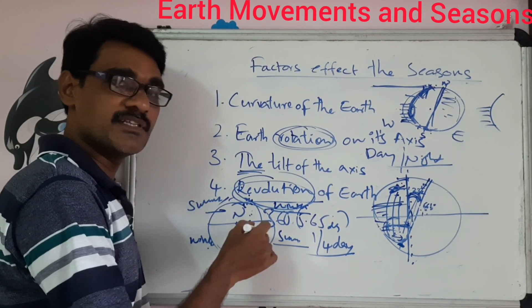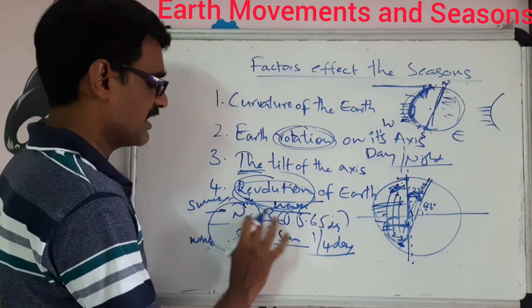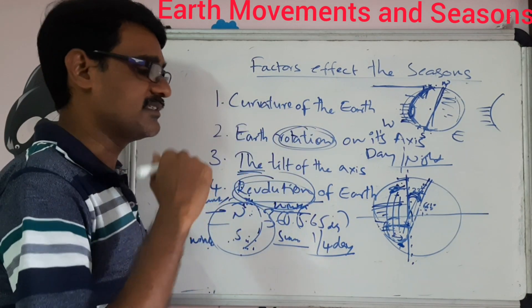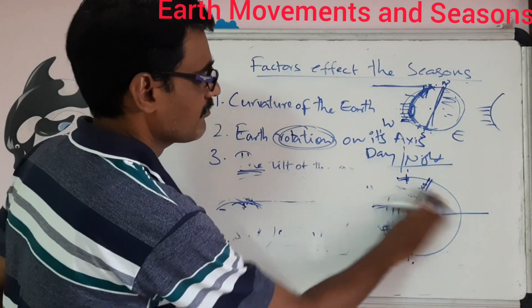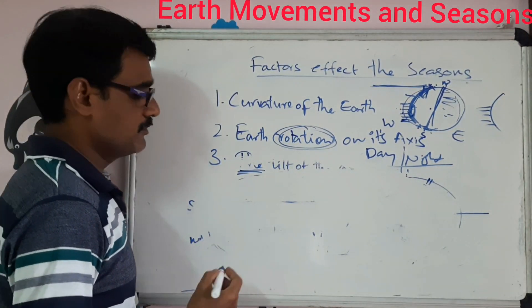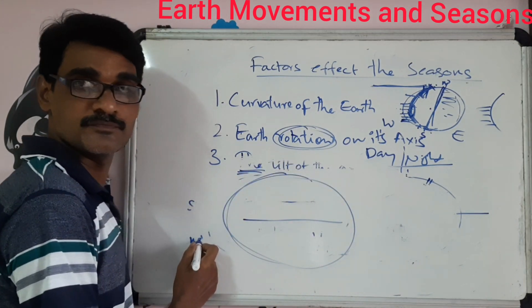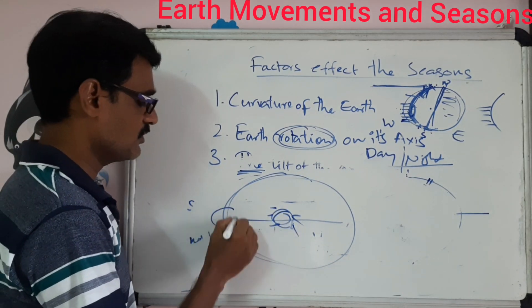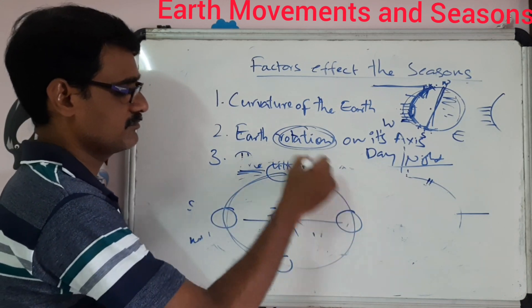Due to revolution and the tilting of the axis, seasons change from summer to winter and winter to summer. Without axial tilt and without revolution, there would be no change in seasons. Throughout the year, the sun's apparent movement changes and this leads to the change in seasons.